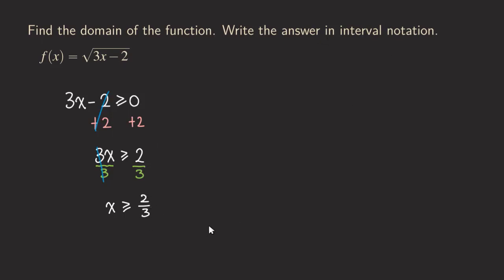Writing the answer in interval notation, based on this inequality, we write the domain as 2 over 3, comma, infinity. For infinity, we always use parentheses. And because there is an equal sign, we are including 2 over 3, so we use square brackets. That's our domain for this function.